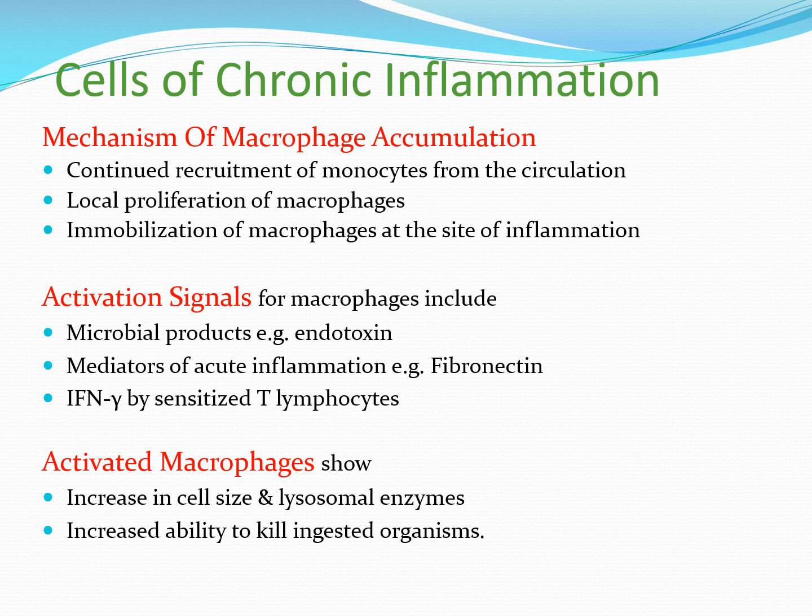The mechanism by which macrophages accumulate at sites of chronic inflammation involves three steps: first, recruitment of monocytes from the circulation into the tissue; second, proliferation of existing macrophages in that area; and third, immobilization of macrophages at the site of inflammation so they remain focused on the main focus of infection. Once immobilized, they become activated and begin secreting their enzymes.